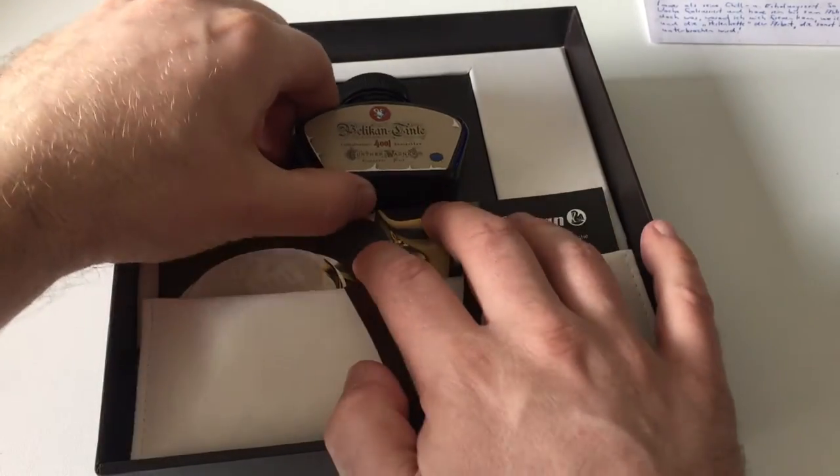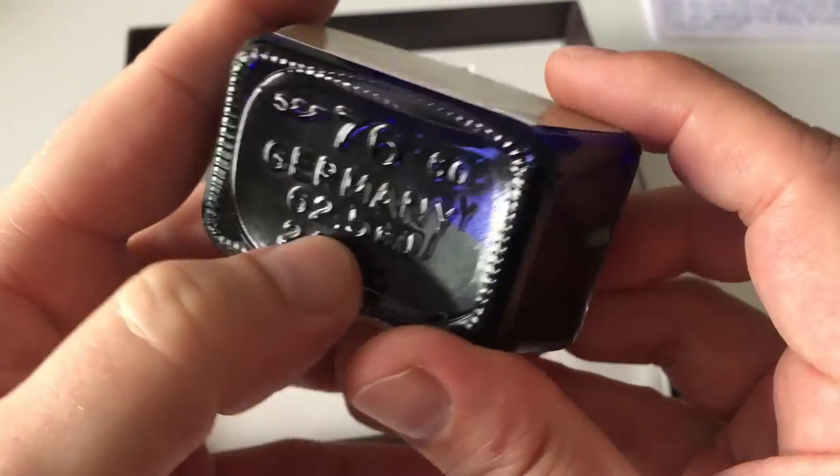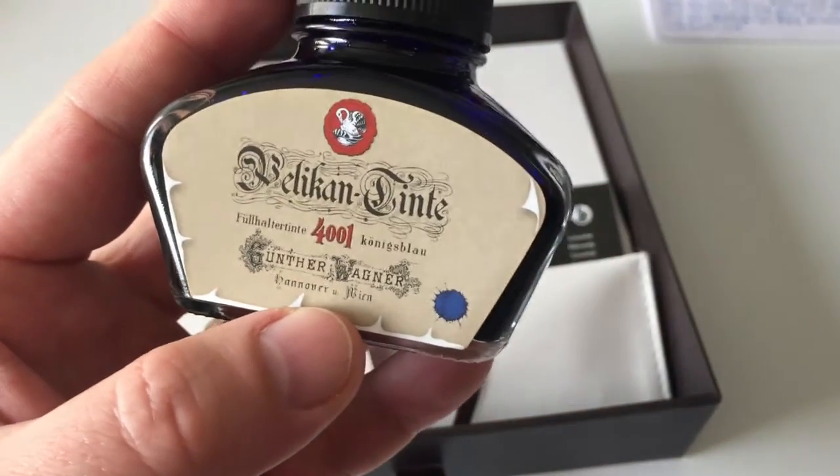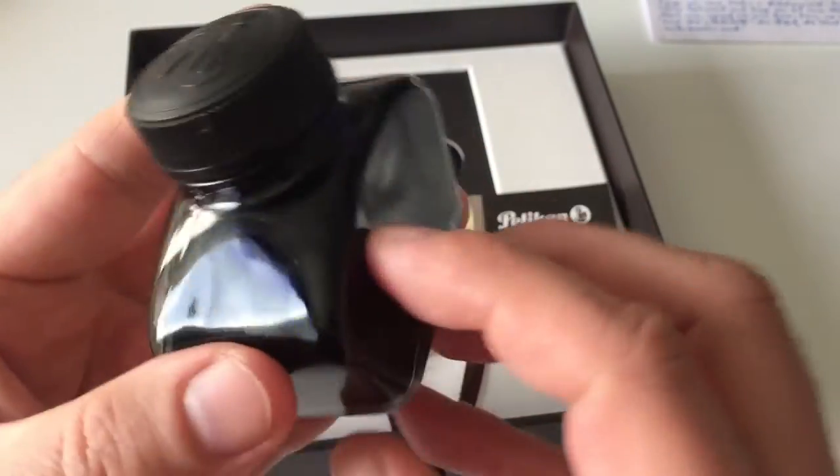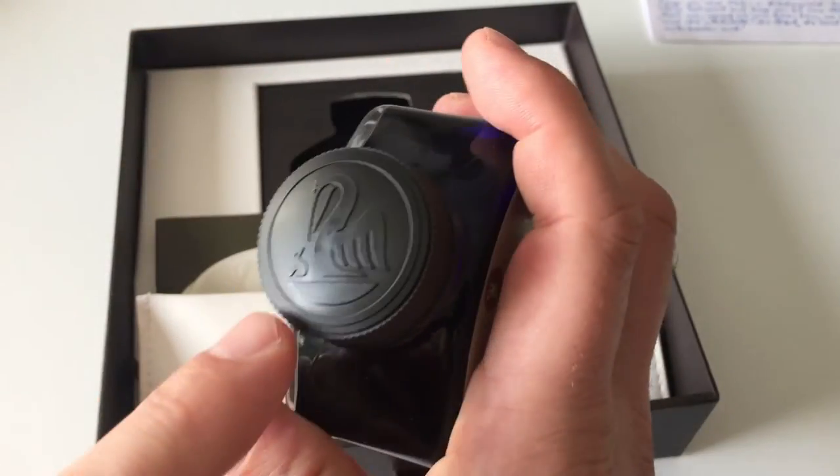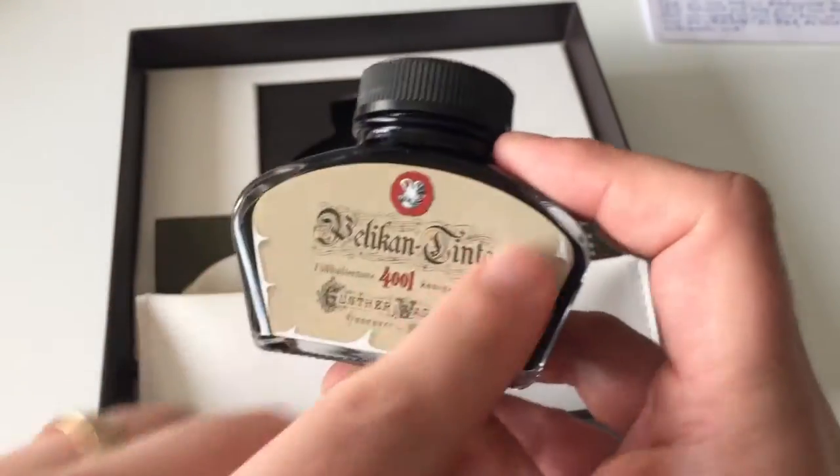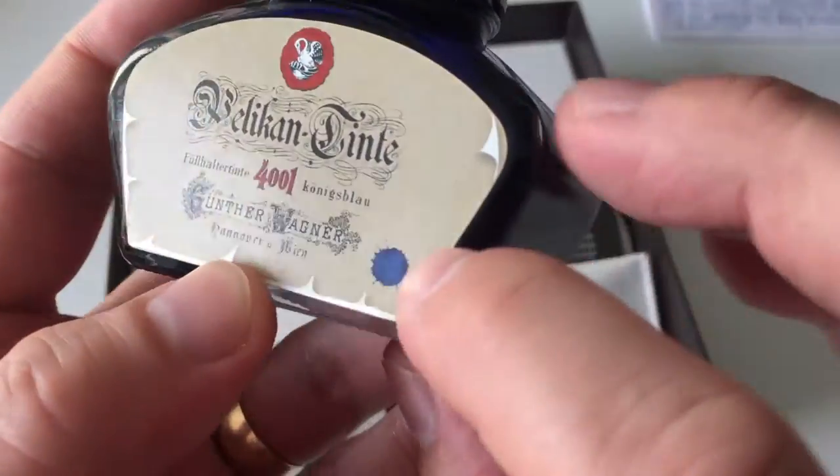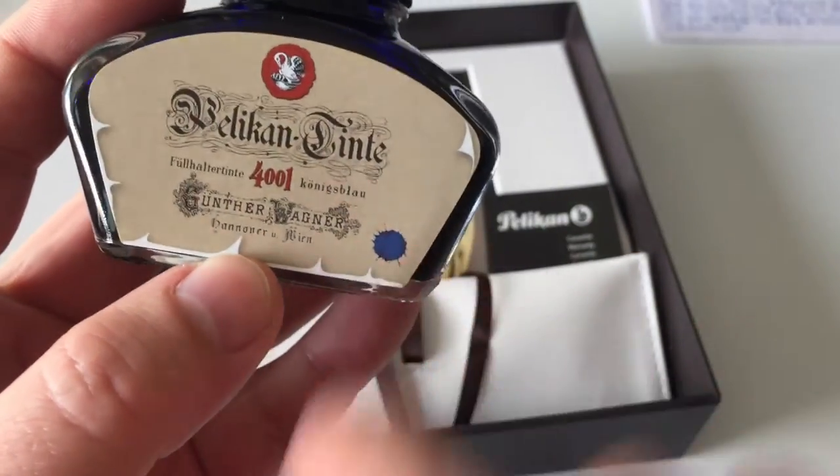The nice thing about this product is that it comes with a large bottle of ink containing 62.5 milliliters of Royal Blue Pelikan 4001 ink. This is the standard glass that the 4001 ink normally comes in, with a Pelikan with one chick on top of it and a vintage ink glass label on it.